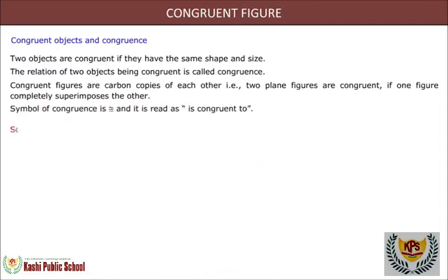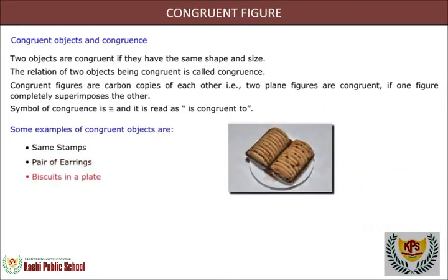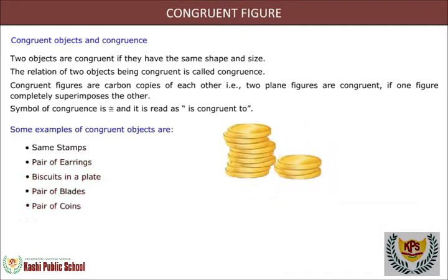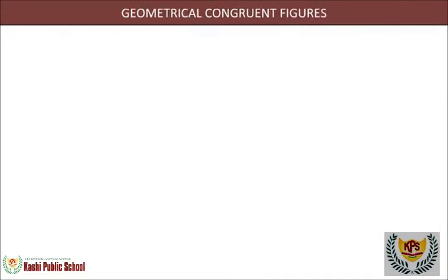Some examples of congruent objects are: same stamps, pair of earrings, biscuits on a plate, pair of blades, pair of coins, plates kept over one another, and keys of the same lock.